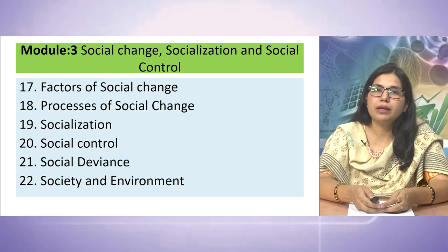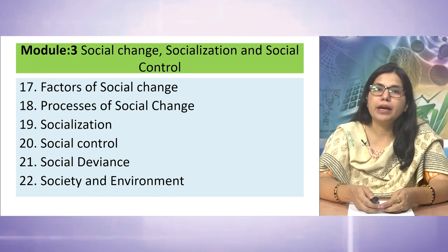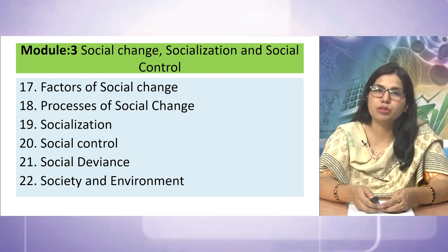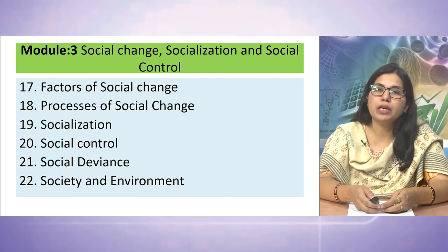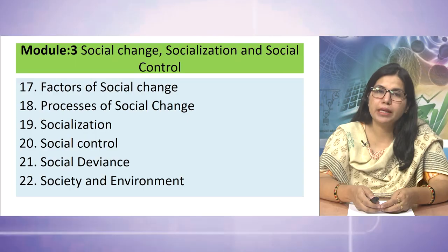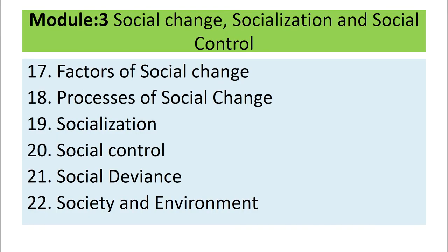Now let us understand module number three, that is Social Change, Socialization and Social Control. This module acquaints the learners with the process of social change in society and how an individual becomes an accepted member of a society through socialization. It also explains how social control is maintained in a society and the relationship between society and environment. You will find six lessons in this module.